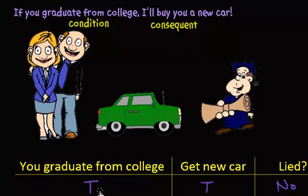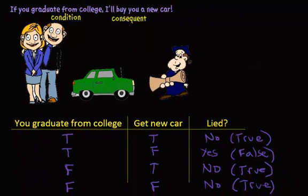And then we went over the truth values and we found that you are false, meaning you've broken your promise when the condition right here is true, but the consequent is false, meaning you didn't follow up with what you promised. So now what I want to do is go over how to form the negation of this if-then statement from up here.